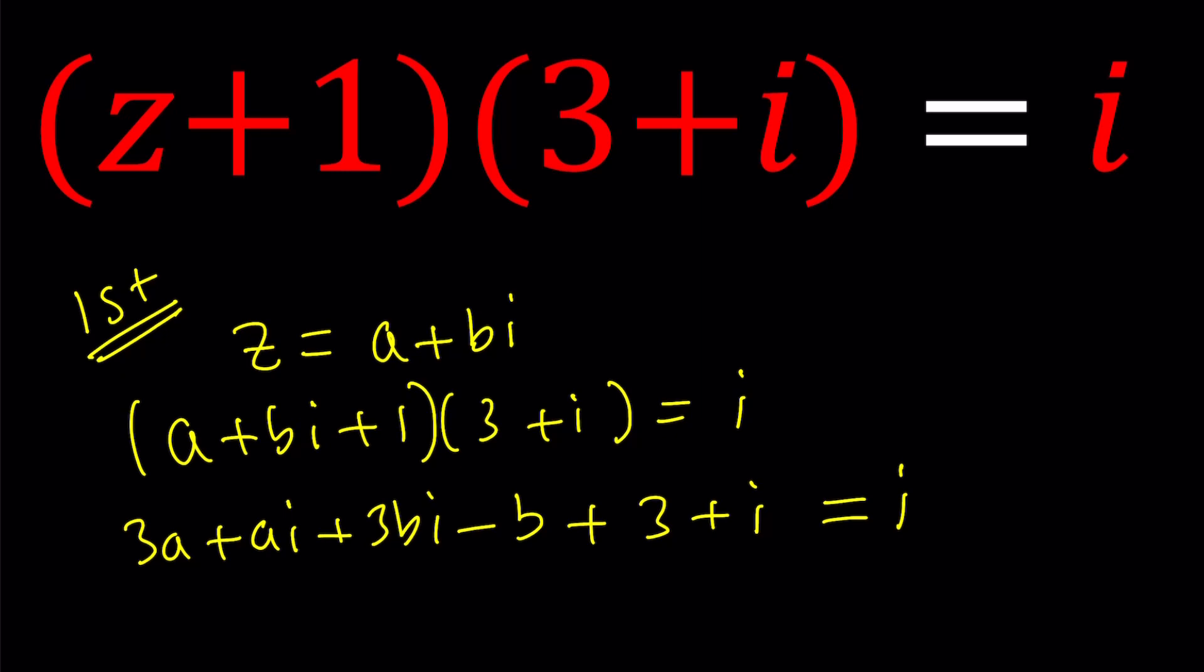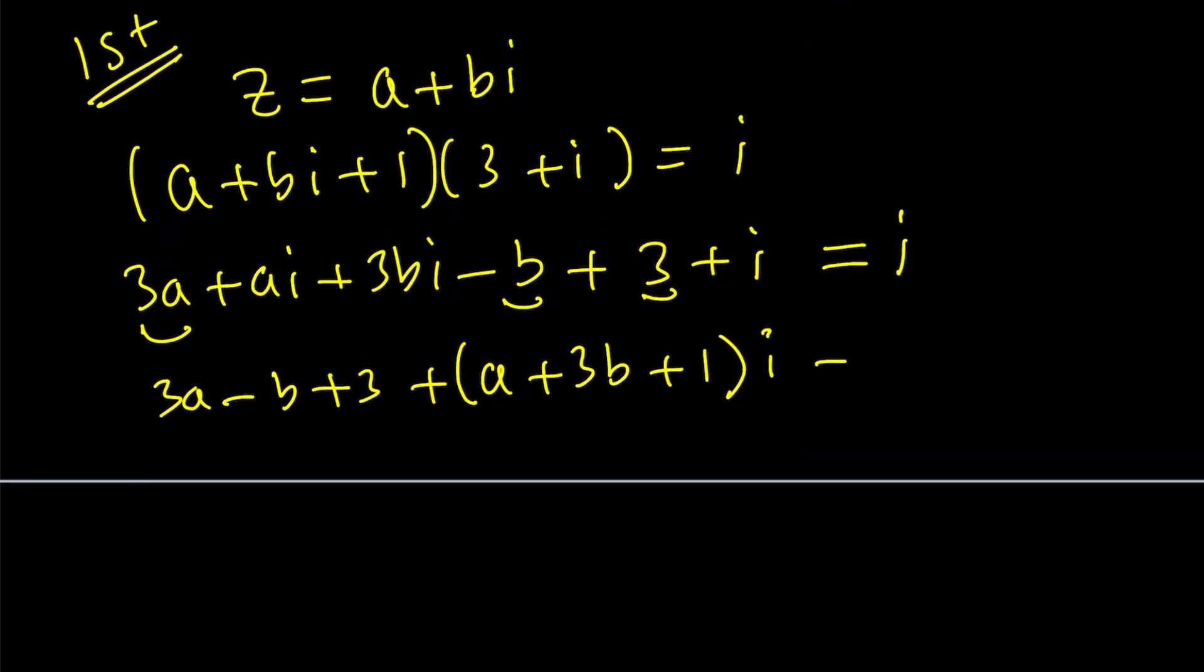So let's see. I have 3A minus B plus 3, and then I have the AI and the 3BI. So I'm going to put those together, and then that'll be the coefficient of I, which is actually the imaginary part. Awesome. So we got an equation kind of like polynomials. If two complex numbers are equal, then their real parts are equal and their imaginary parts are equal.